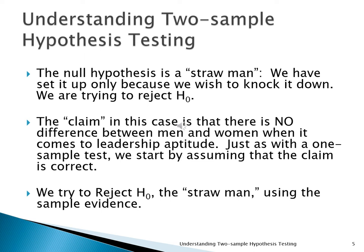Let me talk about a straw man. The null hypothesis is generally a straw man — we set it up because we're trying to knock it down. We're actually saying, let's pretend that there's no difference between the two groups, in this case men and women; they're exactly the same. Now we say, let's look at the sample evidence. Is this the kind of sample evidence we should see if there indeed is no difference? If men and women are exactly the same in leadership ability, should we find a 9.4 difference in the two samples? That's what we found — is that what we expect if there's really no difference?